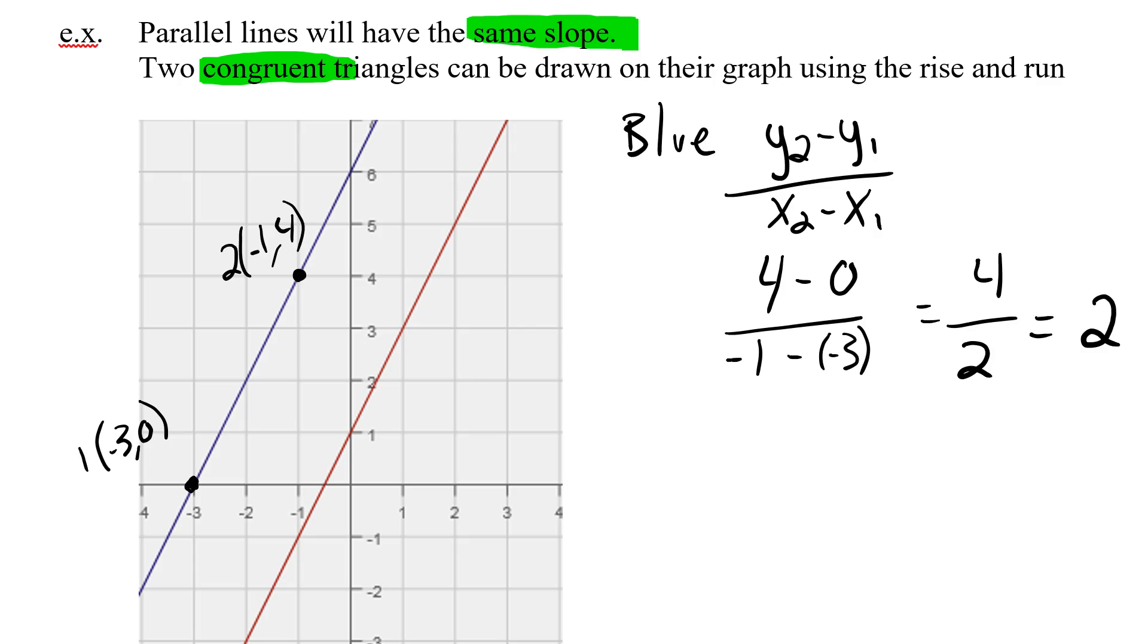Now let's look at the red line. Again, let's choose two points to give our slope. Let's go with this one right here and this one right here. Point 1, the coordinates are on the x of 0 and a y of 1. Point 2 has an x of 2 and a y of 5.